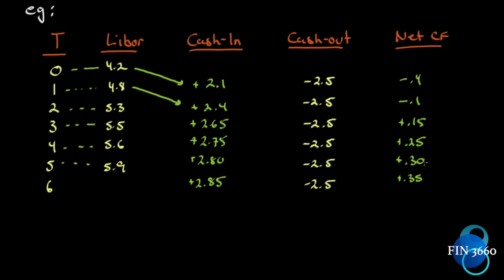The payments are simply netted out. This is on a notional principal of a hundred million — notice that the hundred million doesn't change hands. It wouldn't make sense for Microsoft to send Intel a hundred million and for Intel to send it back, since those would net out to zero anyway.